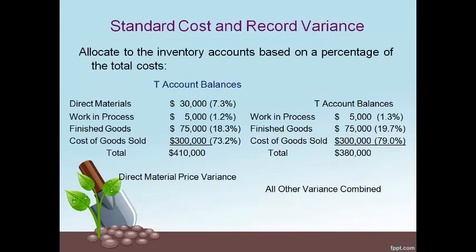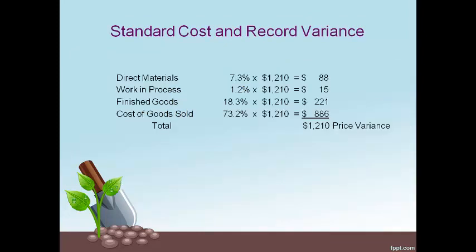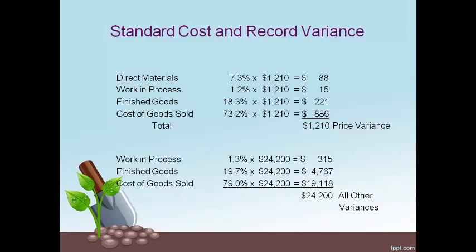The variances are allocated based on the percent of the total cost at each inventory and cost of goods sold account. The balances in each T-account are listed, and the percent of the total is computed by dividing the account balance by the total. The direct materials price variance is allocated to all four accounts, and the other variances are allocated only to the three accounts — not to direct materials. Therefore, two separate percent calculations must be done. The price variance is multiplied by the percent for each account to get the amount to adjust each account, and the net of all the other variances is allocated to the three accounts based on those percents.